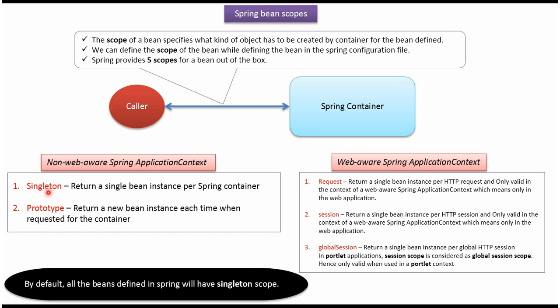Singleton scope returns a single bean instance per Spring container. Prototype scope returns a new bean instance each time when requested from the container. Both of these scopes belong to non-web-aware Spring application context.